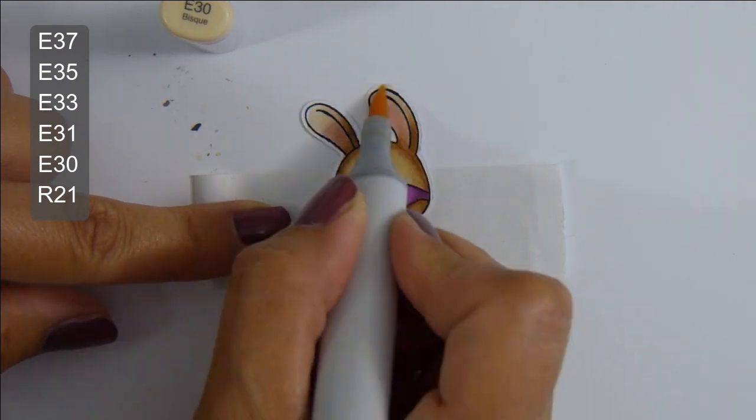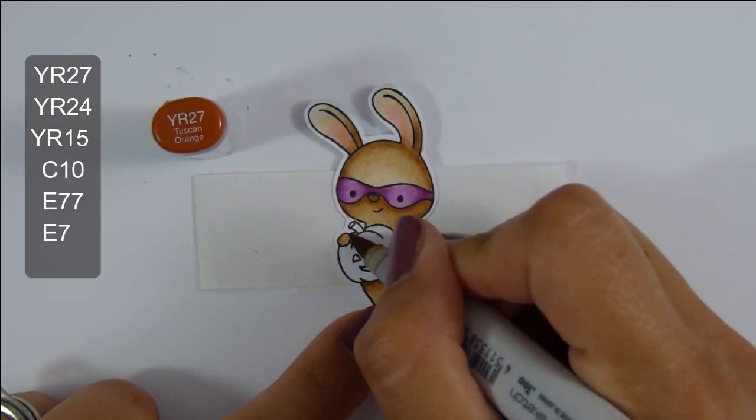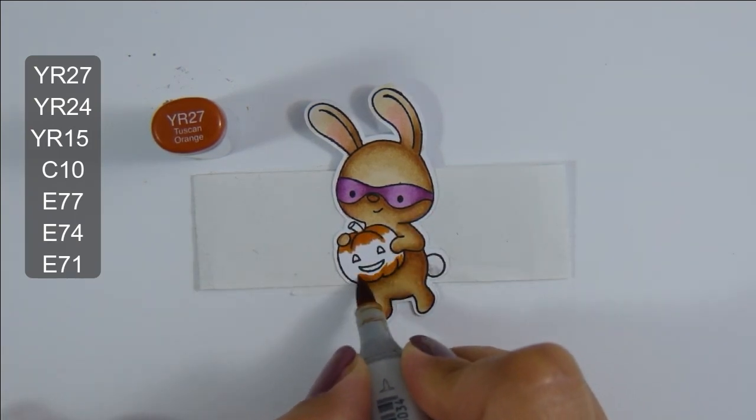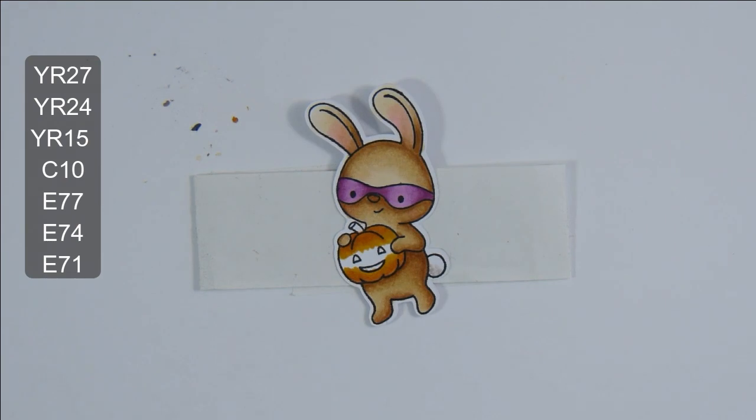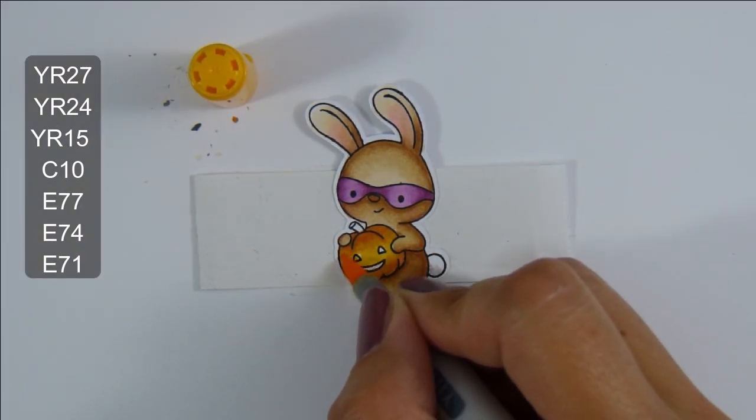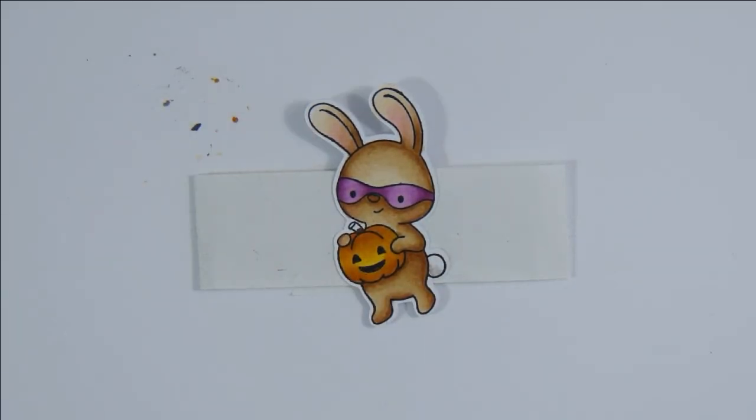And R21 for the cheeks and the ears and a little bit of gray for the tail. Coming in to finish off the pumpkin, these are my favorite colors for pumpkins, some YR markers.